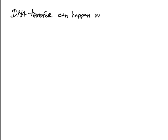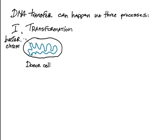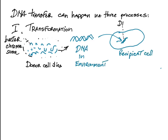DNA transfer from a donor to a recipient can happen via three processes. Transformation: a dead donor cell releases its DNA into the environment, and DNA is taken up from the medium by the recipient cell.